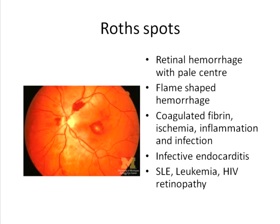Though Roth spots are often discussed clinically in infective endocarditis, they are not specific to it. They are also seen in any vasculitis — commonly systemic lupus erythematosus — as well as leukemic deposits and leukemic clogging of vessels, which can cause similar flame-shaped hemorrhages. They are occasionally seen in HIV retinopathy.